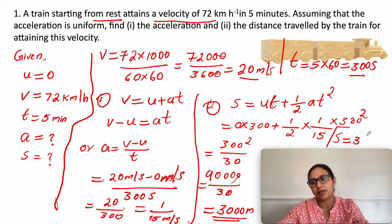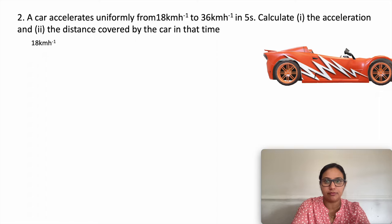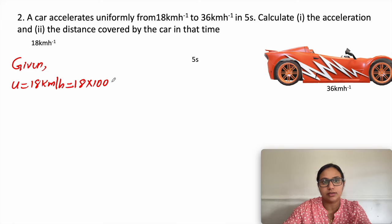Next question: a car accelerates uniformly from 18 kilometer per hour to 36 kilometer per hour in 5 seconds. Calculate the acceleration and the distance covered by the car in that time. Initial velocity is 18 km/h, converting: 18 into 1000 divided by 3600 seconds equals 180 divided by 36, which gives 5 meter per second.